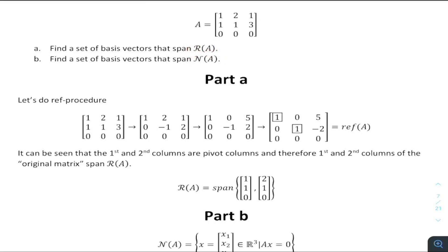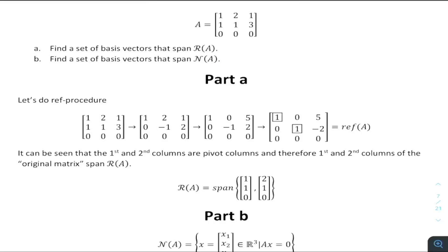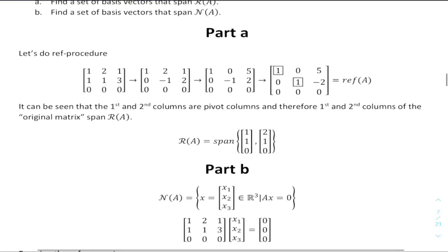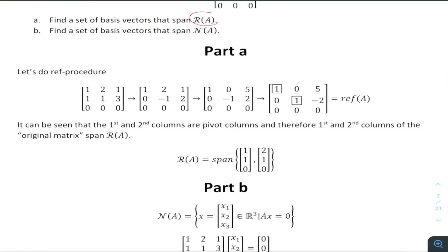And this is the null space — sometimes they say rank space as well. This is null space, also called kernel. And I guess they say image space as well, though I'm not a hundred percent sure on that.